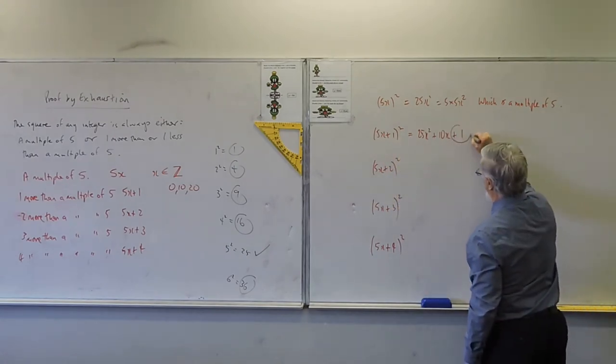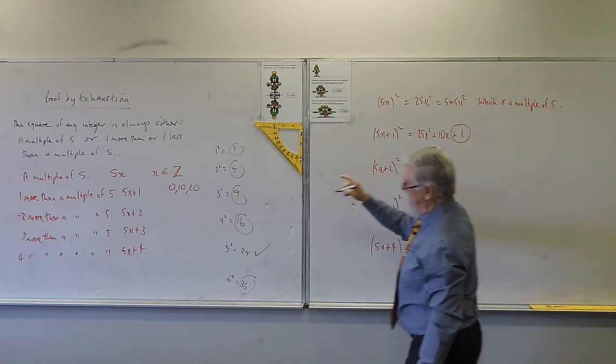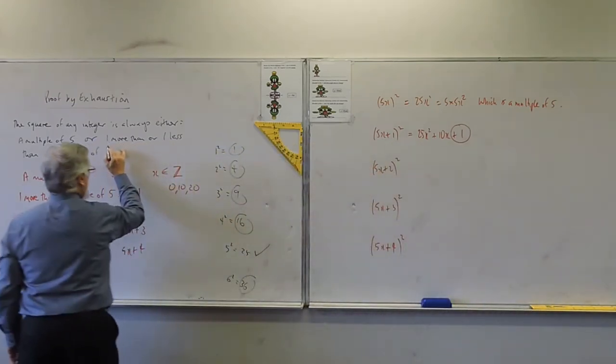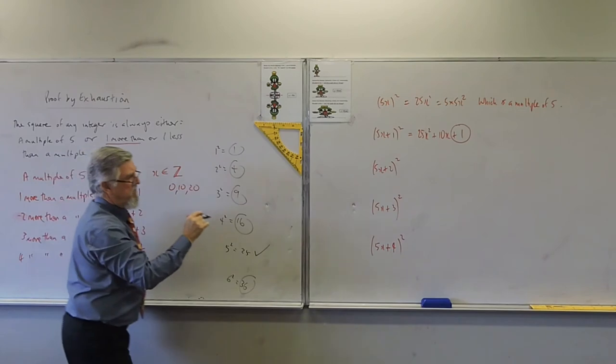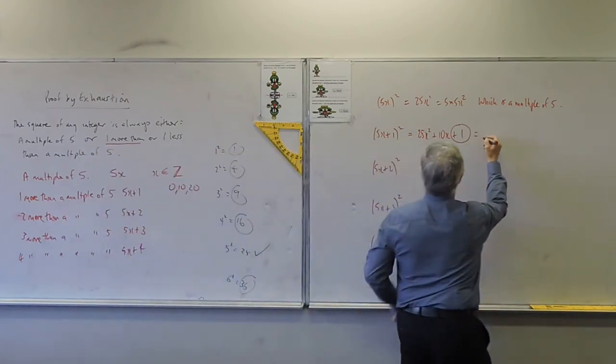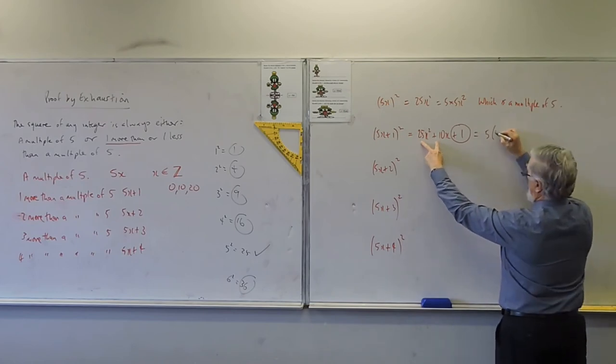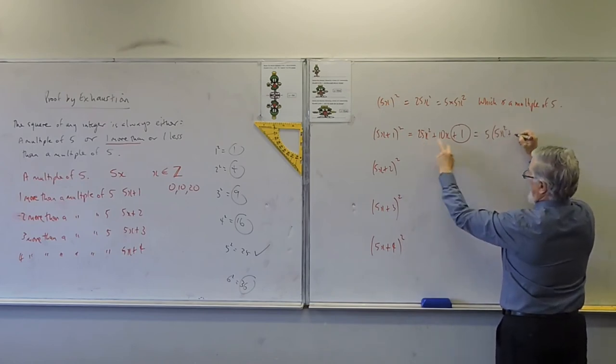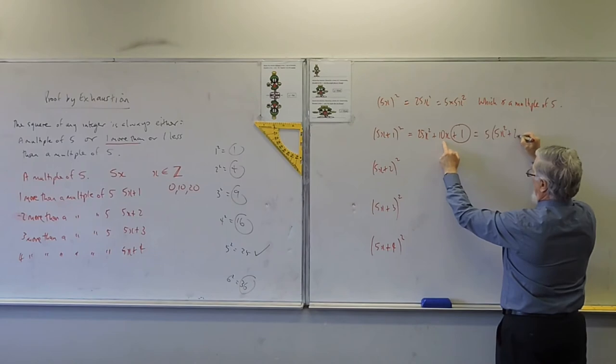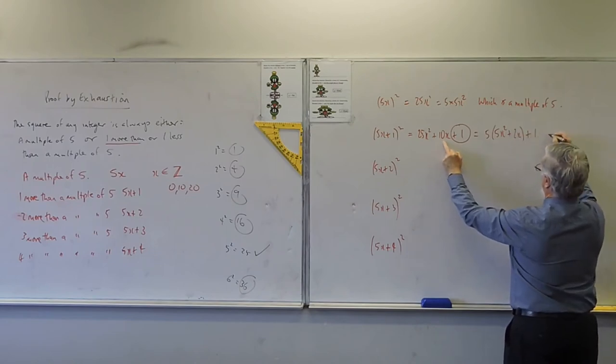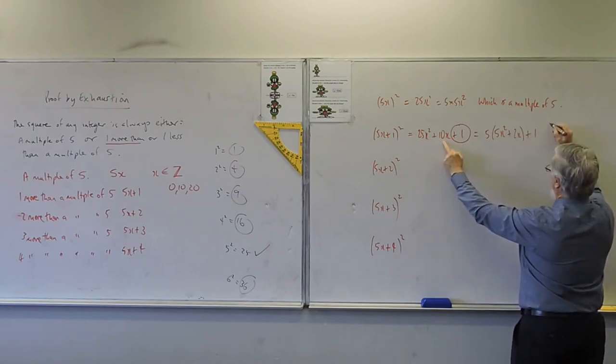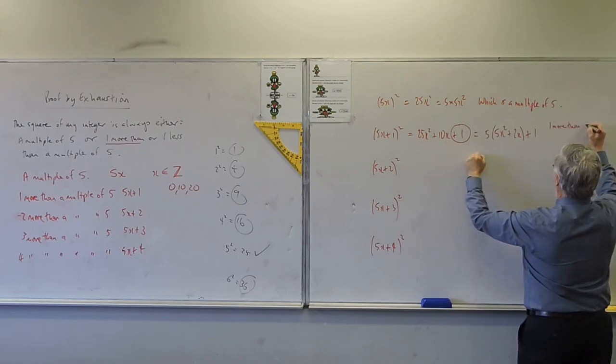Now this is the odd part. But for the way we were looking for one more than and one less than. So this is one more than what? I take out the common factor there. Five outside it. 5X squared plus, 5 plus 2X, plus one, i.e. multiple of five, one more than. Wow.